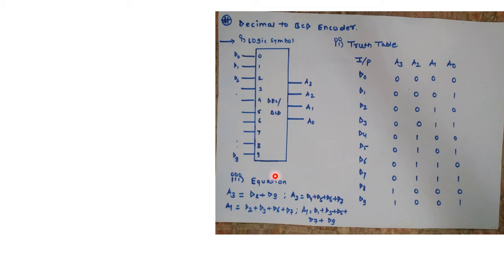Now based on these equations we will write a VHDL code for decimal to BCD encoder. We can see it is simply converting decimal digits into its binary coded form. So it is called as a decimal to BCD encoder.